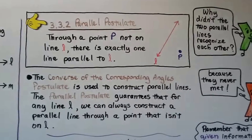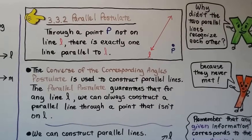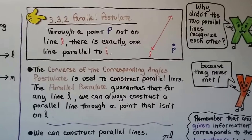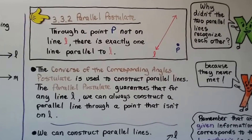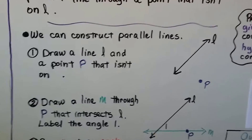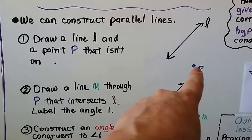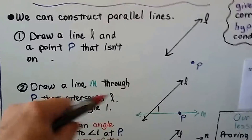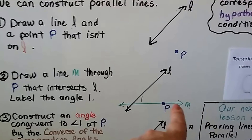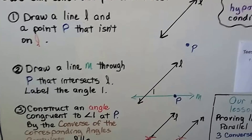The Converse of the Corresponding Angles Postulate is used to construct parallel lines, and the Parallel Postulate guarantees that for any line L, we can always construct a parallel line through a point not on L. To construct parallel lines: first, draw a line L and make a point P that isn't on L. Then draw a line through P that intersects L, and label that angle 1.